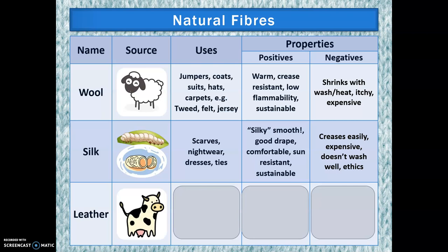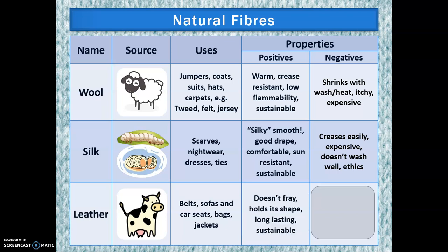Next we have leather, which tends to come from cows. The animals aren't killed for their leather — they're killed for their meat and leather is a by-product — but you can make leather from any kind of animal. It tends to be used for belts, sofas, car seats, bags and jackets, ranging from quite thick belt leather to thin, flexible jacket leather. The benefits are that it doesn't fray, holds its shape well, is very long-lasting and sustainable. Downsides are that it's difficult to sew, requires specialist equipment, is expensive, and there are ethical concerns around butchering the animal.